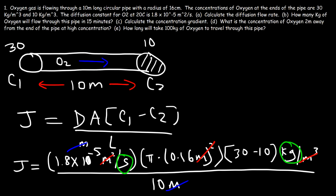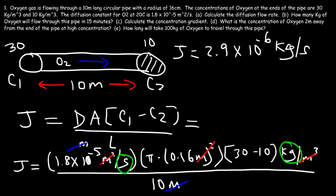Plugging in the numbers, the answer for Part A is 2.9 times 10 to the minus 6 kilograms per second. That is the quantity of oxygen that flows through this pipe every second according to Fick's Law.